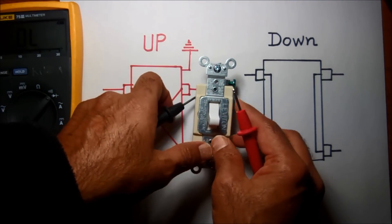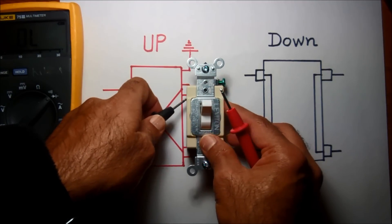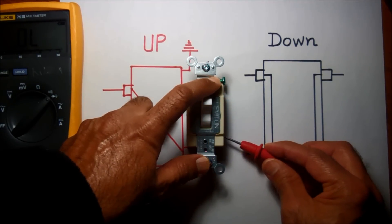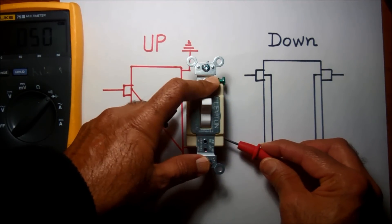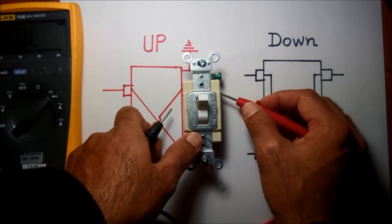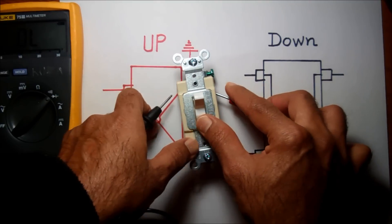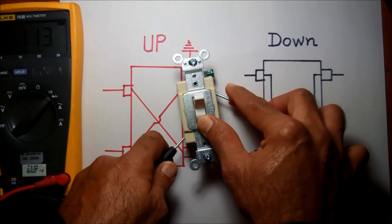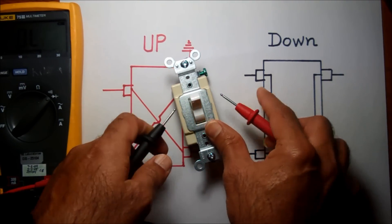Now once the switch is in this position, I'm connecting from here. You can see it's making the connection here. Similarly, once I put the probe here, that's how it makes the connection when the switch is in this position.